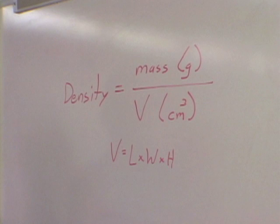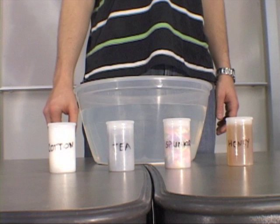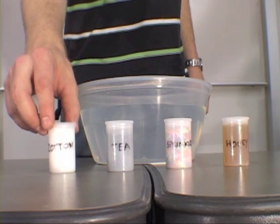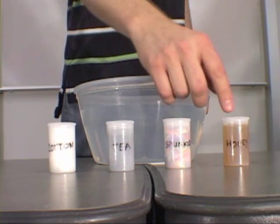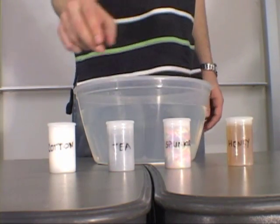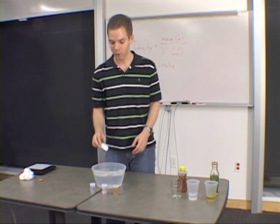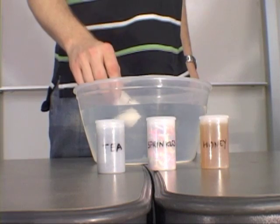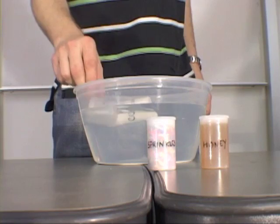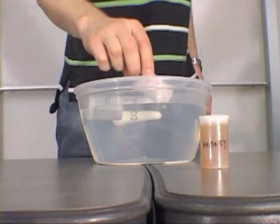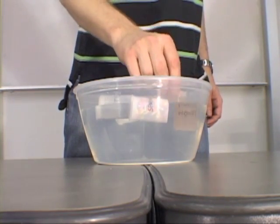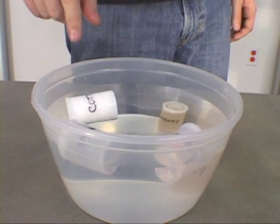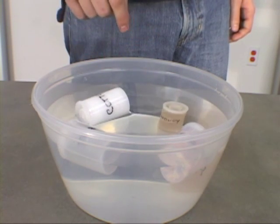We can also visualize density with another experiment. We have four canisters of different materials you can find around the house — cotton, tea, sprinkles, and honey. If we put each of these into a bath of water, we should see them float at different heights because the density between these materials is different. Cotton floats very high in the water, tea floats a little bit lower, then we add sprinkles, and finally honey — which sinks to the bottom, showing it has a very high density, much greater than water. The cotton balls, on the other hand, are floating very high and have a very low density, less than water.